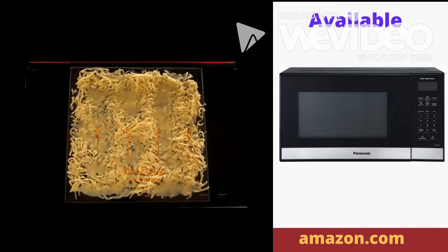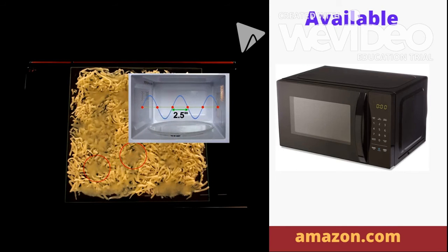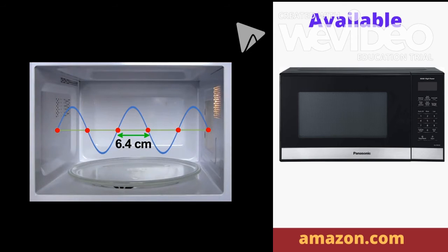If I measure the distance between melted cheese spots, I find about 2.5 inches that would be half the wavelength, the distance between nodes, and is pretty close to the actual wavelength of microwave radiation used.